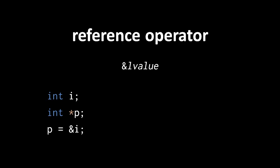Variables are the most obvious kind of L value, but as we'll see shortly, there are a few other kinds. So the reference operator works on any expression which is a valid target of assignment. In this example, we declare an int variable i, an int pointer variable p, and then use the reference operator to assign to p an int pointer value representing the address of i.